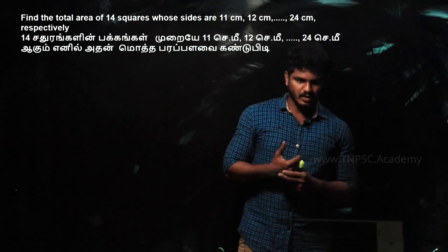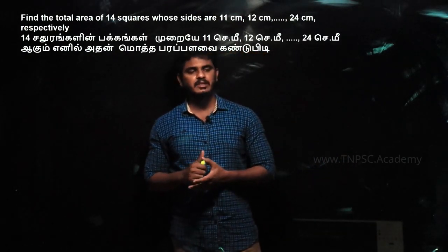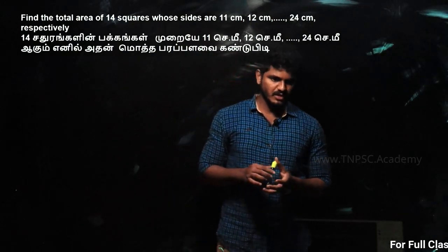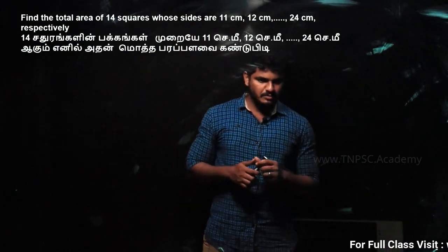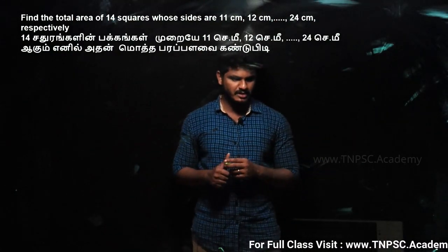Find the total area of 14 squares whose sides are 11 cm, 12 cm, till 24 cm respectively. The total area of 14 squares is 11 cm, 12 cm till 24 cm.